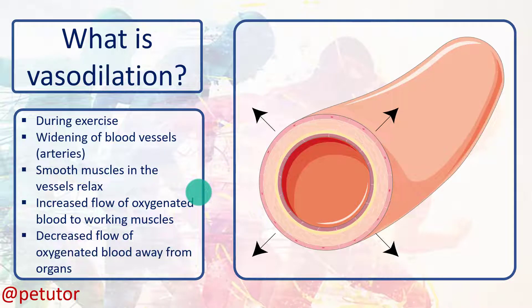At the same time, there's a decreased flow of oxygenated blood away from the organs. This ties in especially with vascular shunt — if you haven't seen the video on the vascular shunt, please go and have a look at that. The key points about vasodilation during exercise are: the widening of the blood vessels, smooth muscles in the vessels relax, and there's an increased flow of oxygenated blood to the working muscles.